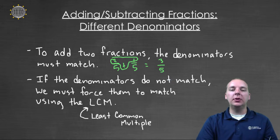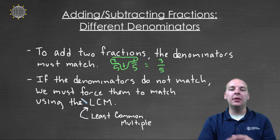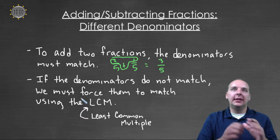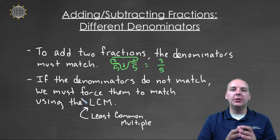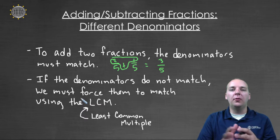Well it gets a little trickier when the denominators don't match each other. Here's what we have to do. If the denominators do not match, we need to force those denominators to match. We're going to use something called the least common multiple. Now there's a couple of different ways that you can find the least common multiple. One's a little informal and one's a little bit more formal.